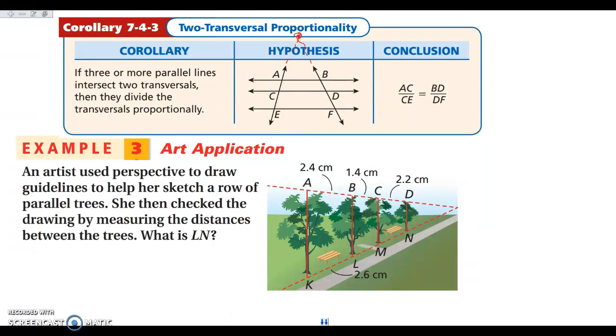So we have here that an artist used her perspective to draw guidelines to help her sketch a row of parallel trees. The thing here that's important is that the trees are parallel. Then she measured the distance between the trees. We want to know the length of LN. So I want to know this whole distance here. So I'm going to call that X, which means I want to use this whole distance up here. So 1.4 plus 2.2 is going to be 3.6 centimeters. So that's what I want to kind of look at setting up here is I want this whole distance LN. So I need to compare the whole distance that's kind of going to match to it on the other side. So again, we're going to set this up. Here's a fraction bar, an equal sign, and a fraction bar.